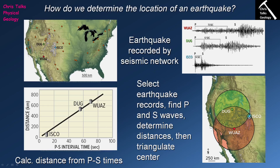For ISCO, the interval was 14 seconds: we start there, come up to the trend line, then read across — ISCO is about 100 kilometers from the earthquake source. For DUG at 57 seconds, following the same method, DUG is about 550 kilometers away. For WUAZ at 73 seconds, the same process tells us WUAZ is approximately 675 kilometers from the earthquake source.